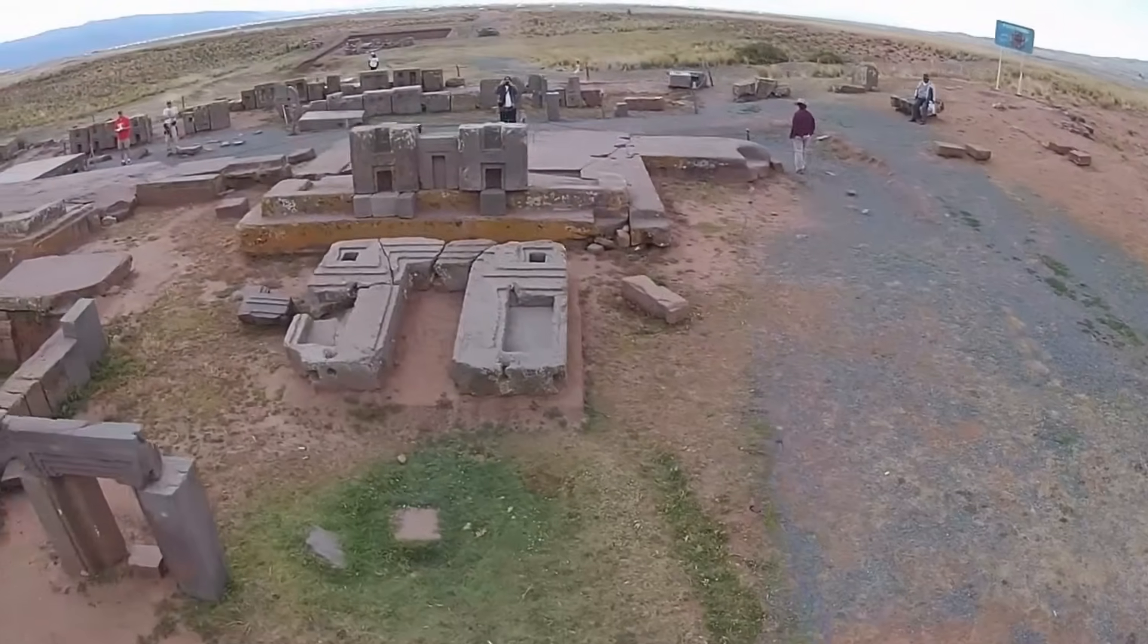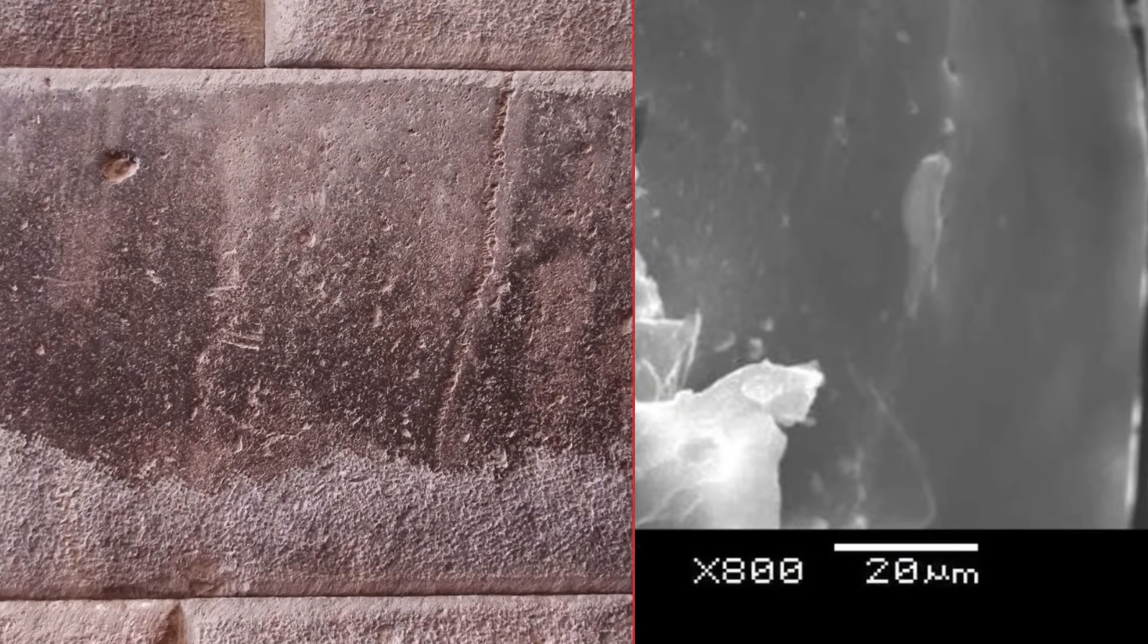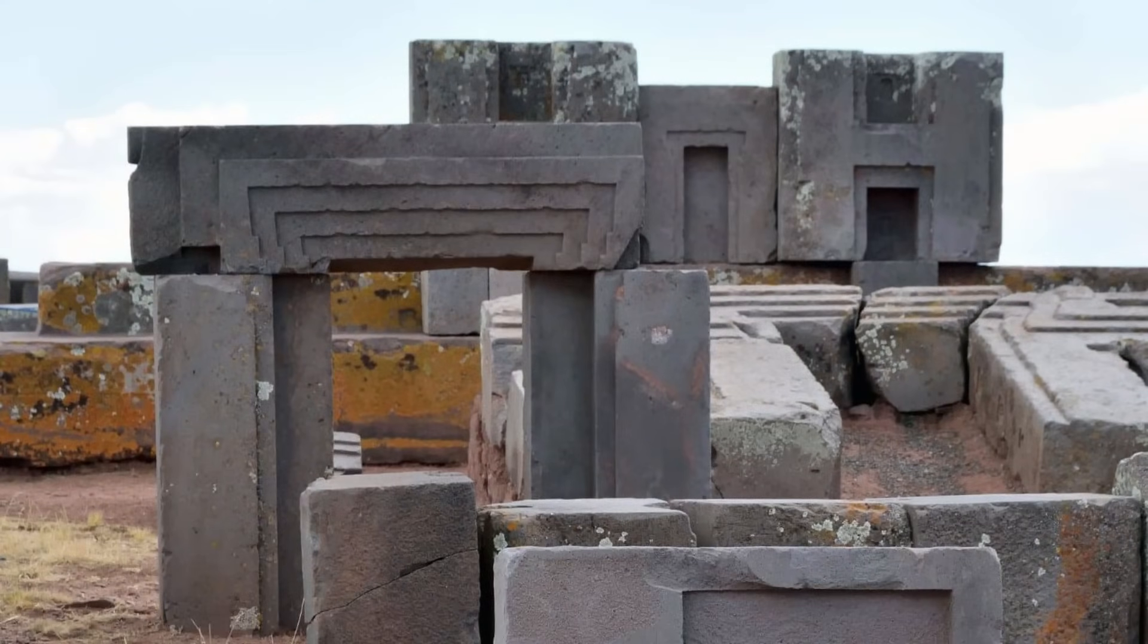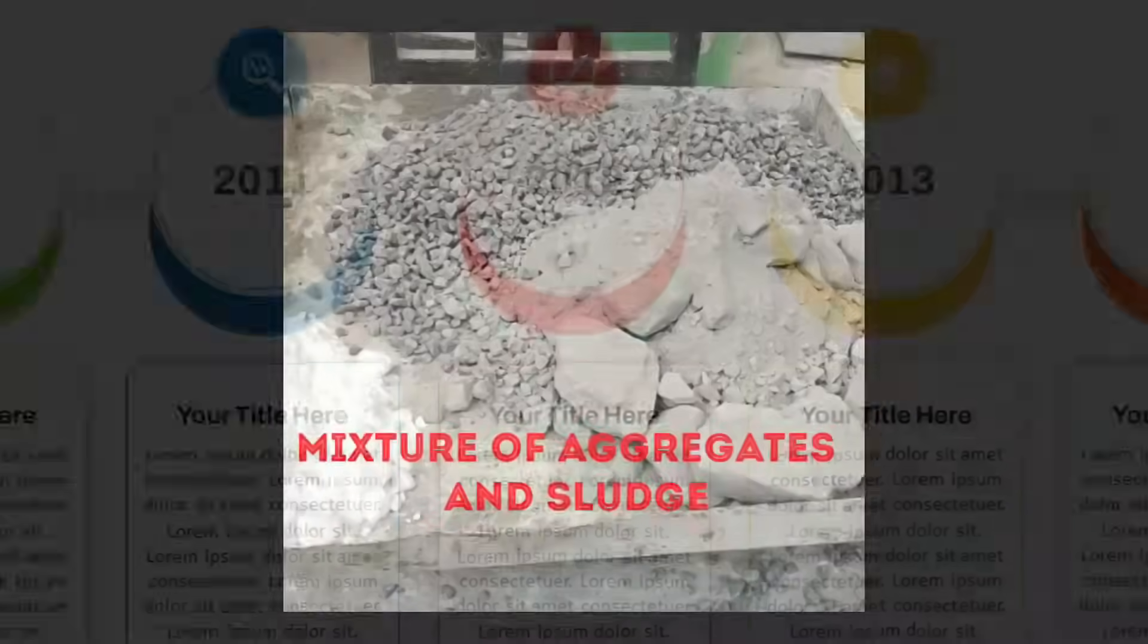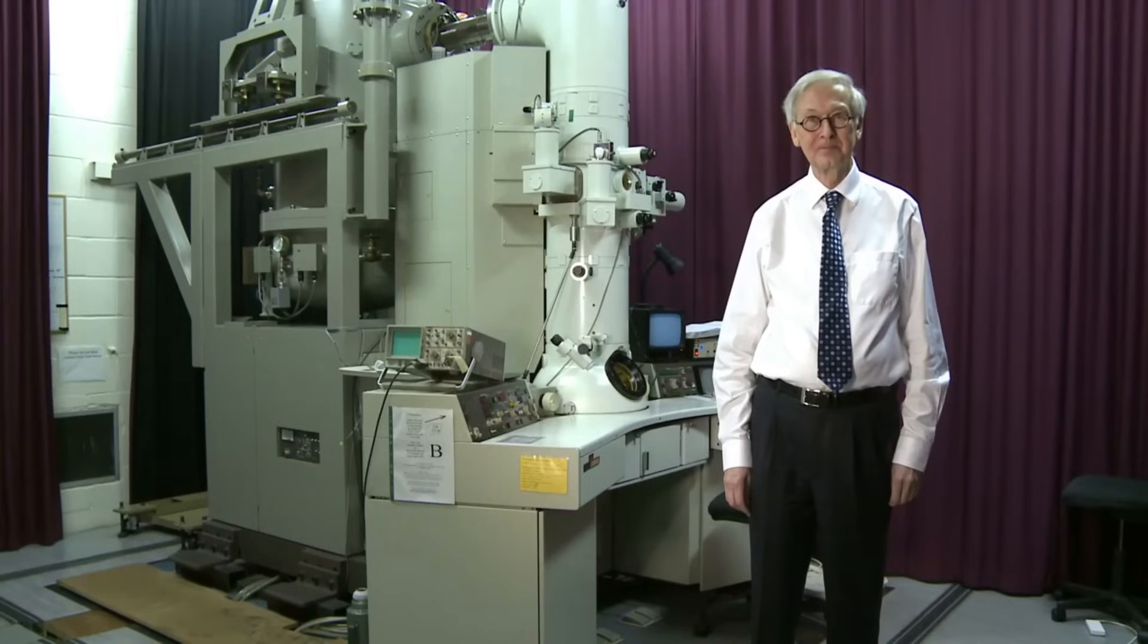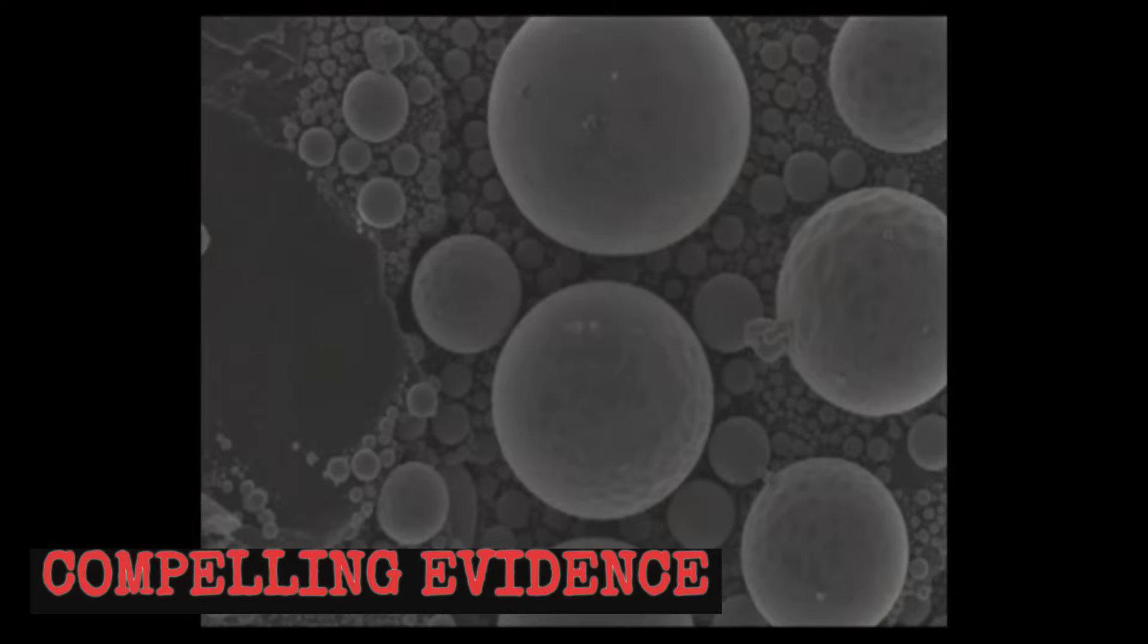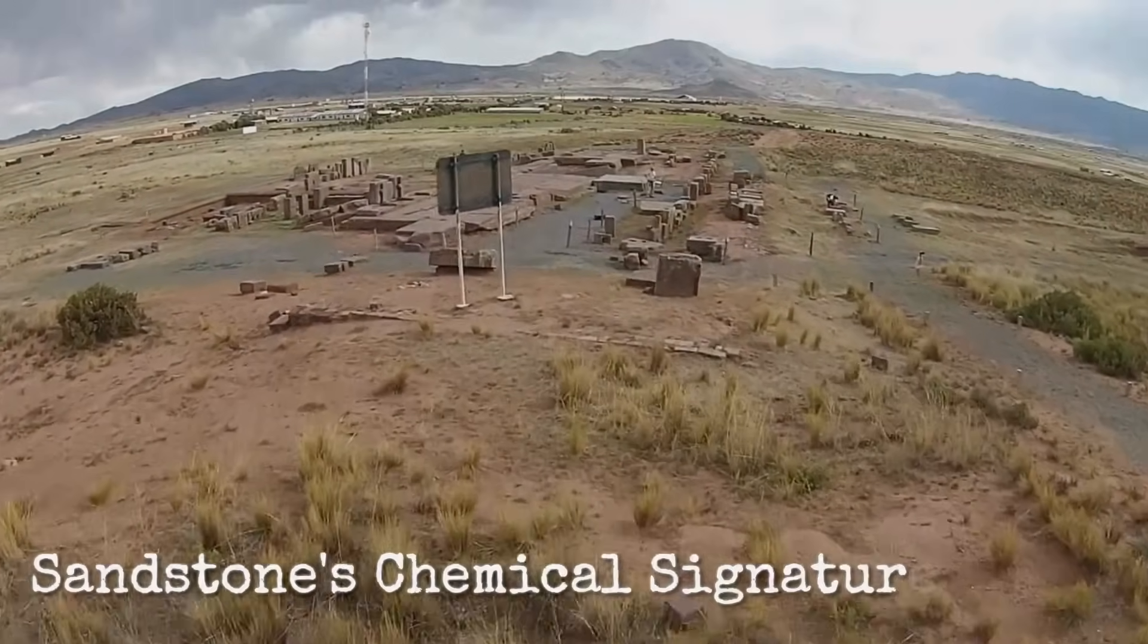The casting hypothesis explains the uniform block faces, the lack of tool marks, and the razor-sharp joins. Unlike natural sandstone, which fractures unpredictably, these blocks show crisp edges and precise fits, as if released from a mold. The first published SEM binder discovery in the early 2010s gave weight to this theory. Since then, sodium-activated geopolymer stones produced in the lab have matched both the physical and microstructural features of the ancient blocks. Skeptics note the absence of ancient molds and suggest natron could have arrived through trade or later contamination. Still, the chemical and structural evidence for casting is compelling, making the sandstone analysis a cornerstone for those who argue that Puma Punku's builders mastered a lost technology.